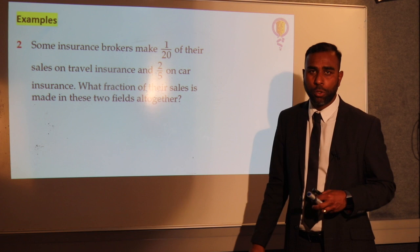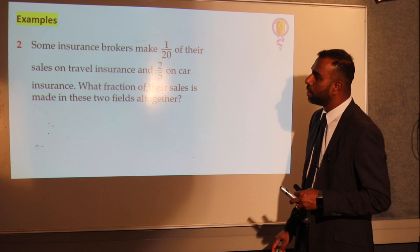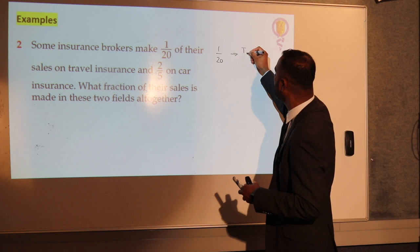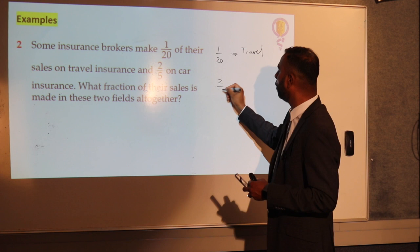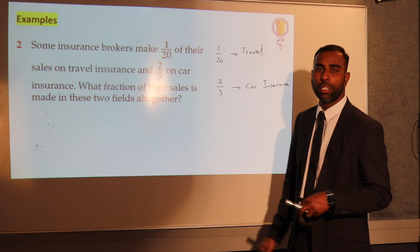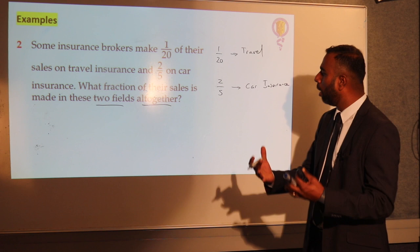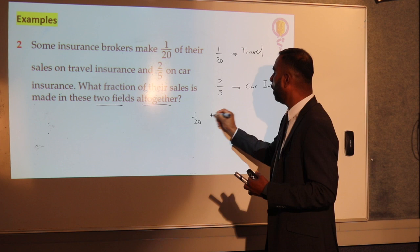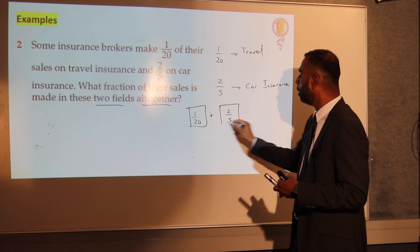Let's have a look at example two — same concepts. Insurance brokers make 1 twentieth of their sales on travel insurance and 2 fifths on car insurance. The question is: what fraction of their total sales is made in these two fields altogether? That means we are adding the two fractions: 1 twentieth and 2 fifths — once again two fractions with different denominators.